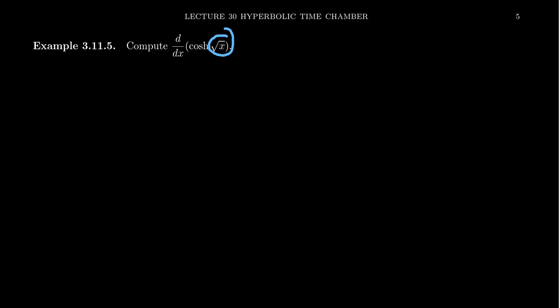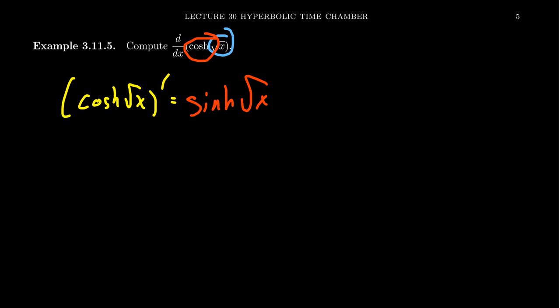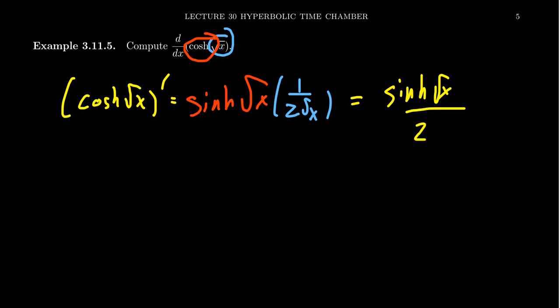So could we calculate the derivative of cosh of the square root of x? Absolutely. We should recognize that there are two functions in play: the square root of x sitting inside of cosh. So we take the derivative by the chain rule. The derivative of cosh of square root of x — take the outer derivative, you get sinh of the square root of x, then multiply by the inner derivative, which is the derivative of the square root of x: one over two times the square root of x. So the result is sinh(√x) over two times the square root of x.